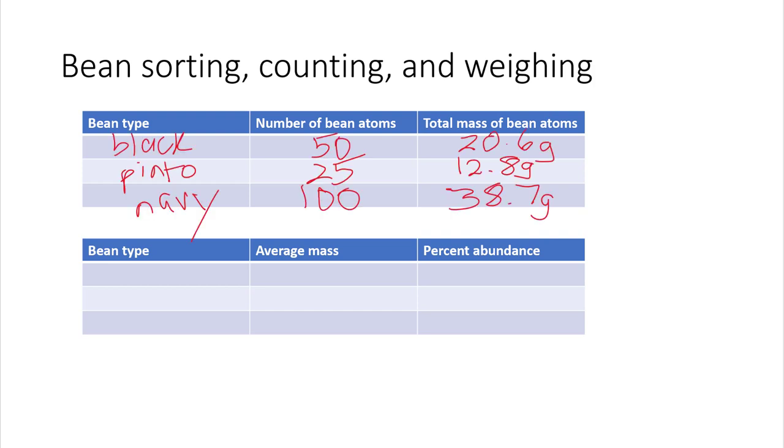And that allowed you to calculate their average mass and their percent abundance. So here's some sample data that I put down. Under the bean type, you write black, pinto, and navy.